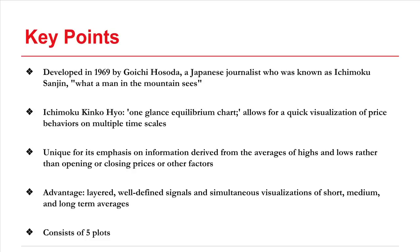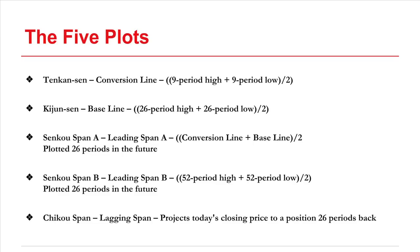The indicator is made up of five different plots. The first is the Tenkan Sen, or the conversion line, which averages the nine-period high with the nine-period low. This is the fastest plot.